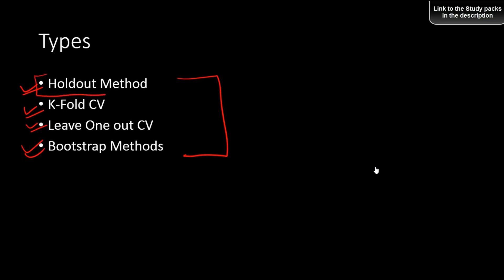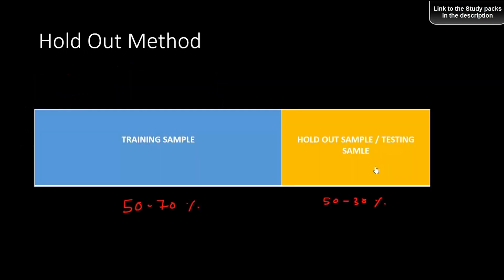The first one — the holdout method — is very popular. If you have ever built a model, you probably already know this one. What you do is divide your sample into two different samples: one is the training sample and the second one is the test or holdout sample. The training sample could have 50 to 70 percent of the data, and your holdout sample could have 30 to 50 percent of the data.